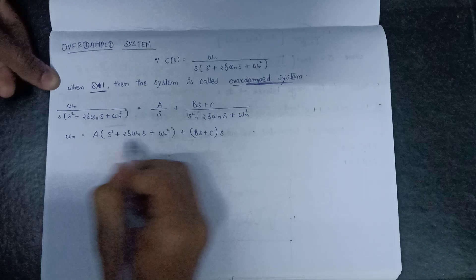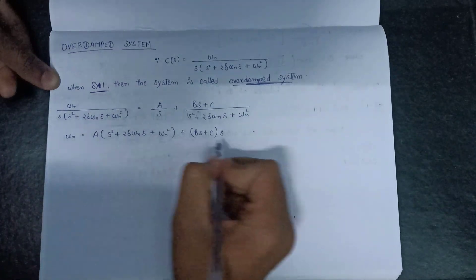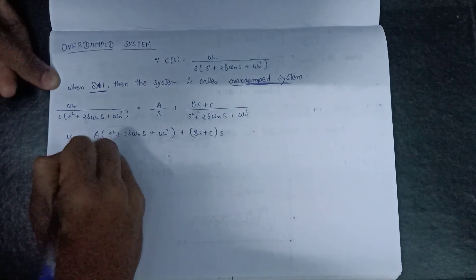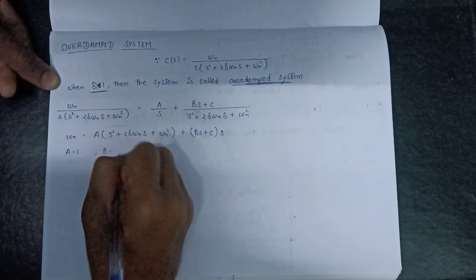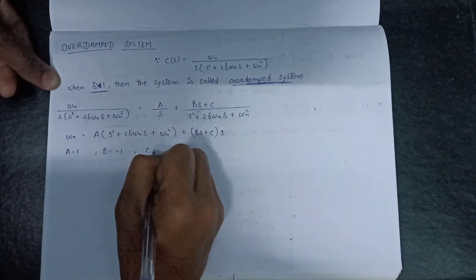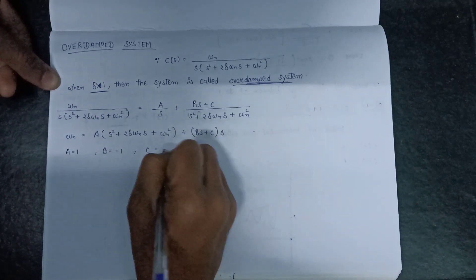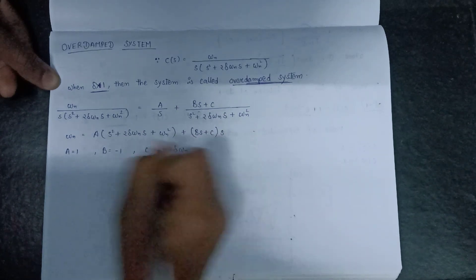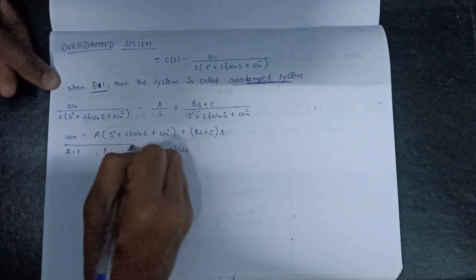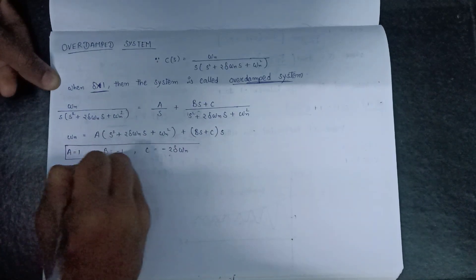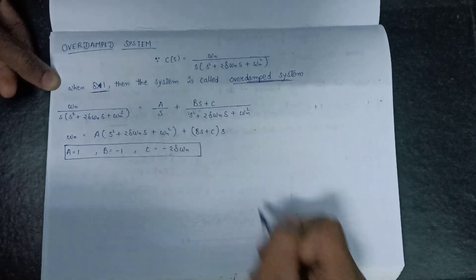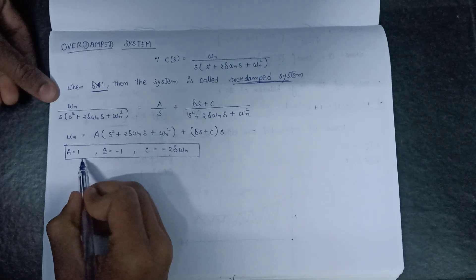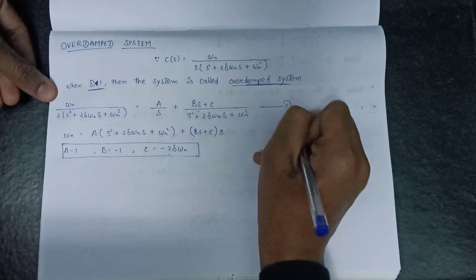On taking the LCM we get omega_n squared equals A multiplied with (s squared plus 2*delta*omega_n*s plus omega_n squared) plus (B*s plus C) multiplied with s. On solving this expression we get the values: A equals 1, B equals minus 1, and C equals minus 2*delta*omega_n.